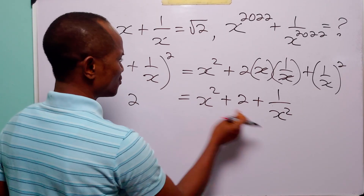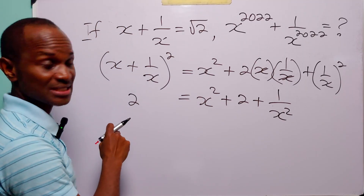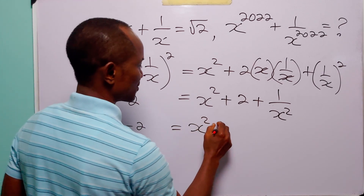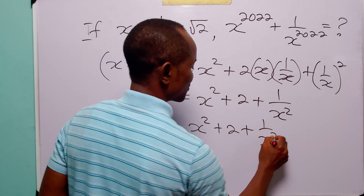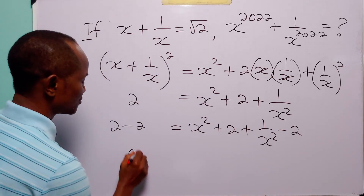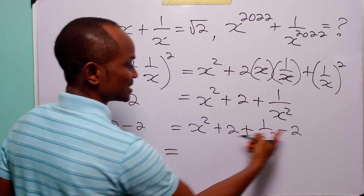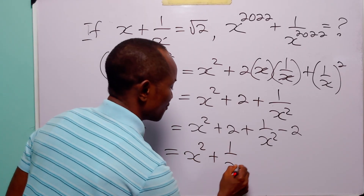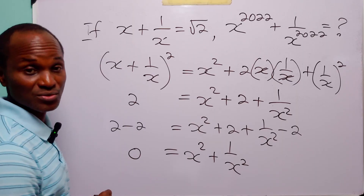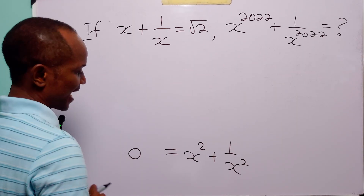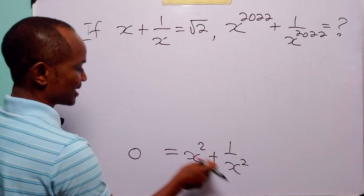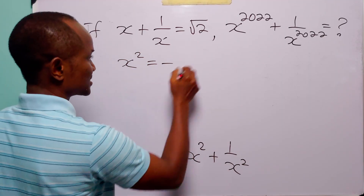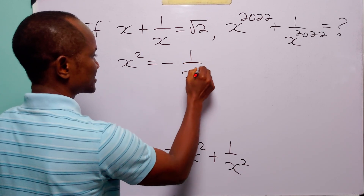Notice that when we subtract 2 from both sides of this equation, we have 2 minus 2 is equal to x squared plus 2 plus 1 over x squared minus 2. That gives us 0, and this takes care of that, leaving us with x squared plus 1 over x squared being equal to 0. We can rewrite this equation as x squared is equal to minus 1 over x squared.